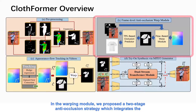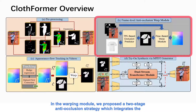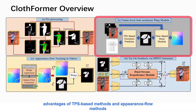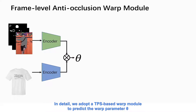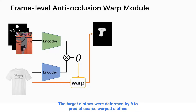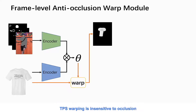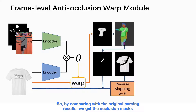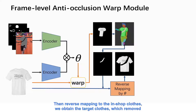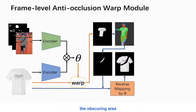In the warping module, we propose a two-stage anti-occlusion strategy which integrates the advantages of TPS-based methods and appearance flow methods. In detail, we adopt a TPS-based warp module to predict the warp parameter theta. The target clothes are deformed by theta to predict coarse-warped clothes. TPS-warping is insensitive to occlusion, so by comparing with the original parsing results, we get the occlusion masks. Then, reverse mapping to the in-shop clothes, we obtain the target clothes with the obscuring area removed.